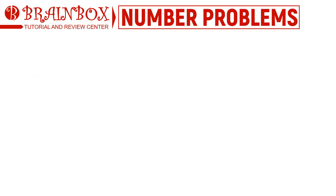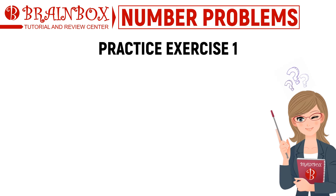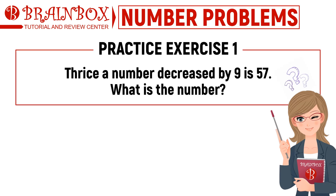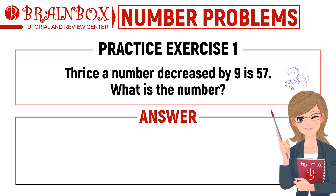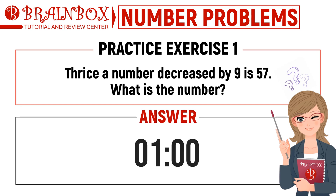Since we have thoroughly discussed number problems, let us try to expound our knowledge by answering this practice set. You have one minute to answer each item. Good luck! Number one: thrice a number decreased by 9 is 57. What is the number? Timer starts now.